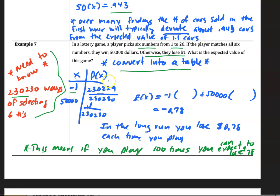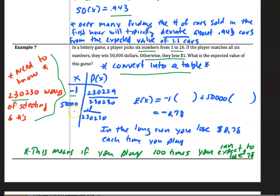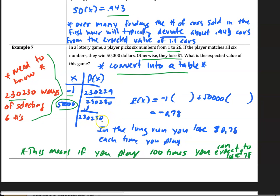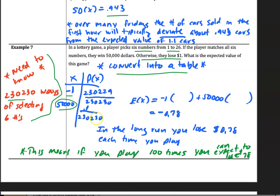The probability of losing is 230,229 out of 230,230. And the chance that you're going to win 50,000, what you're going to do one out of every 230,000 times, this is how often that will happen.